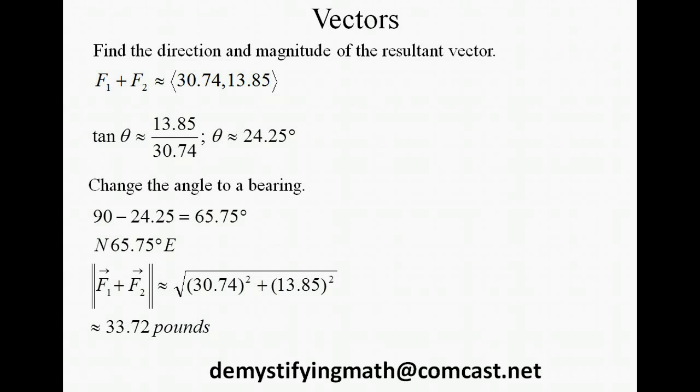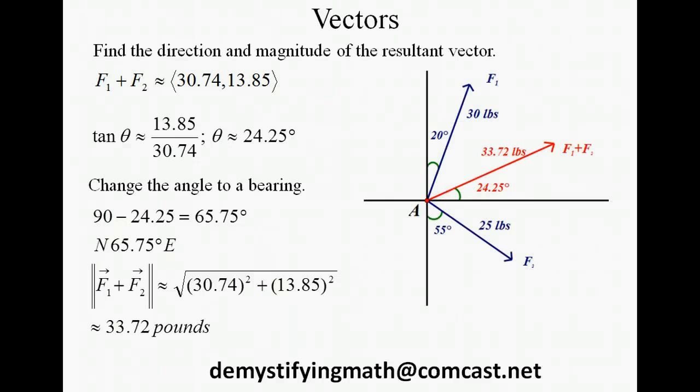Then we want to find the magnitude of the sum of the vectors. So we're going to use our distance formula and square our x term, add it to the square of our y term and take the square root. So we get around 33.7 pounds. Now drawing that on our coordinate plane with our original two vectors seems to make sense. Remember that when you're adding the two vectors it's the same as putting them endpoint to endpoint. So if you take vector f2 and move it so its starting point is at the end of vector f1, it should meet up with our resultant vector at the endpoint of f1 plus f2. So this seems to make sense for us.